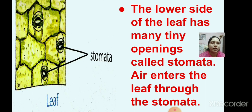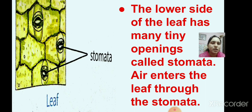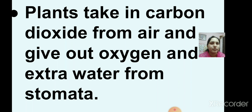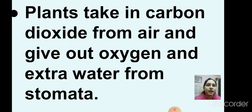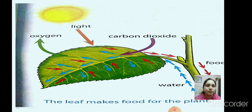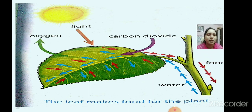Now about the stomata. The lower side of the leaf has many tiny openings called stomata. Air enters the leaf through the stomata. Plants take in carbon dioxide from air and give out oxygen and extra water through the stomata. This is a diagram of how the leaf makes food for the plant, which is also given in the textbook.